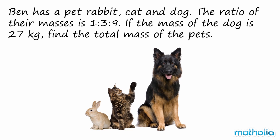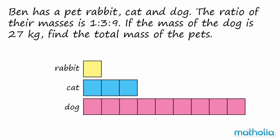We can represent the mass of each pet with a bar model. The length of each bar is given by the ratio. The mass of the dog is equal to 9 units. We also know that its mass is 27 kilograms.